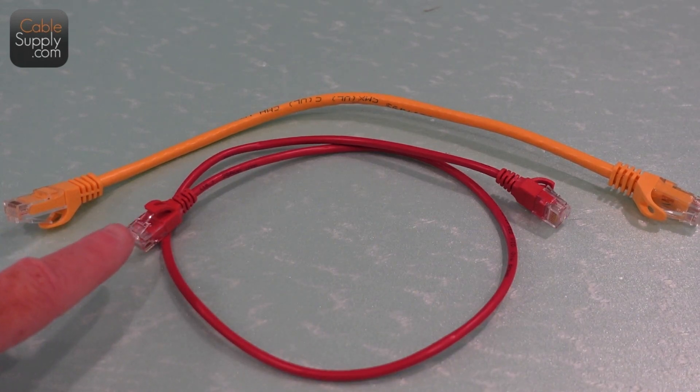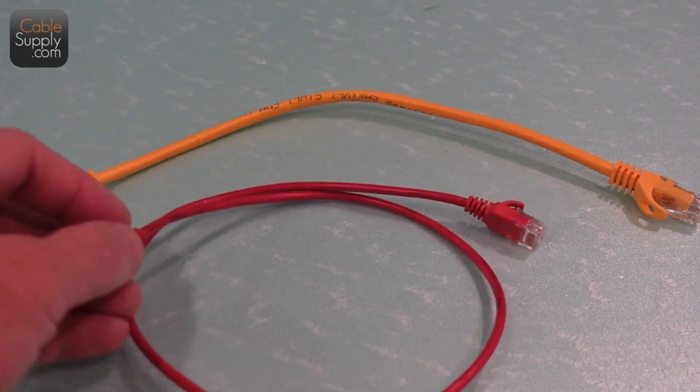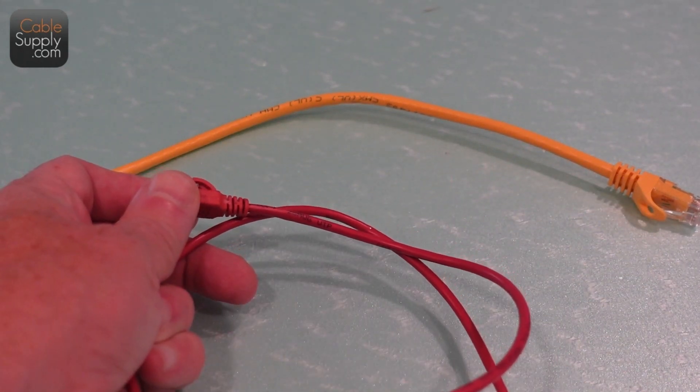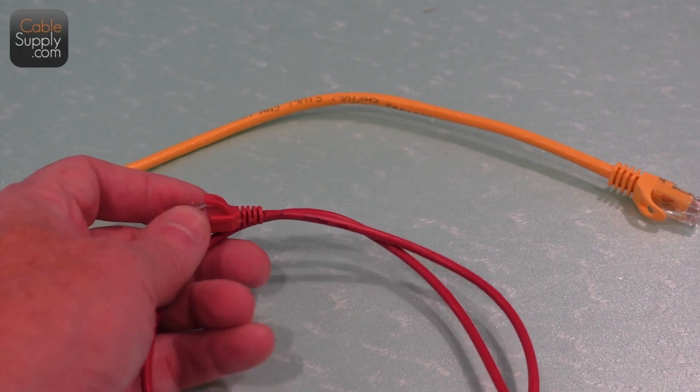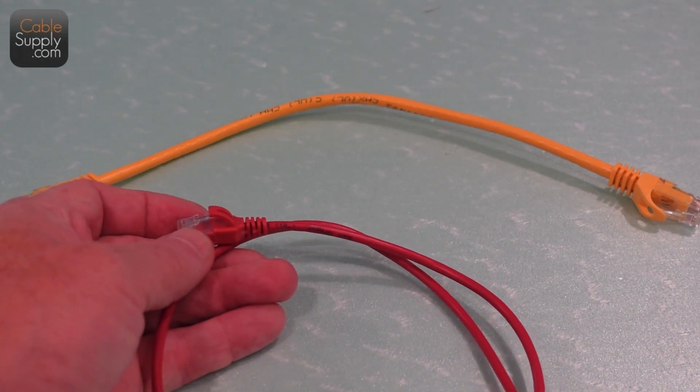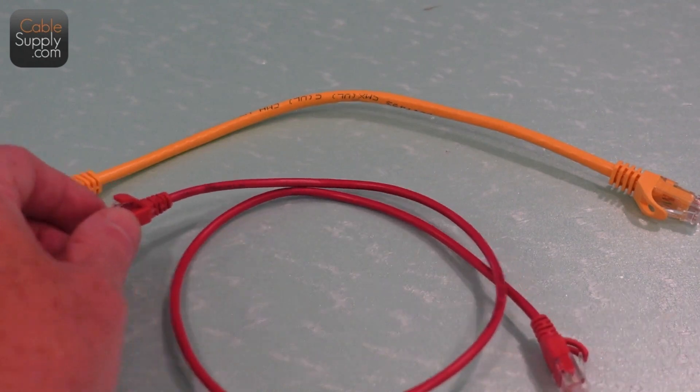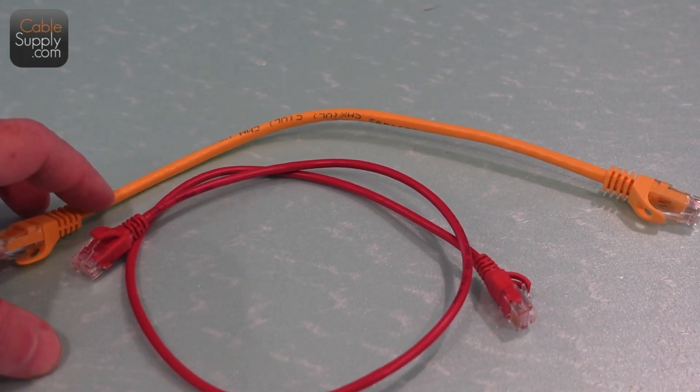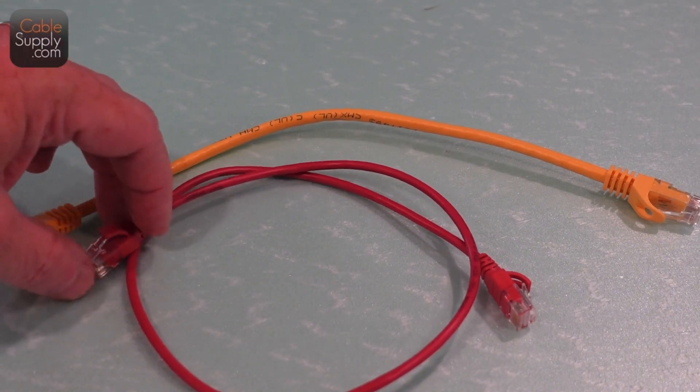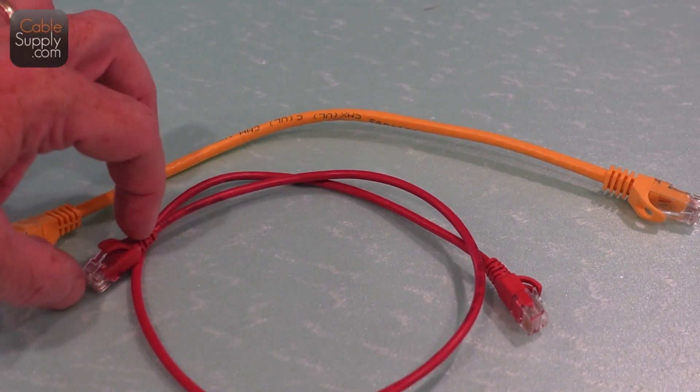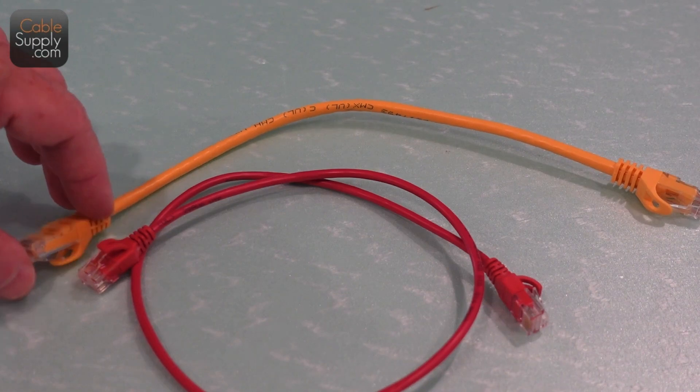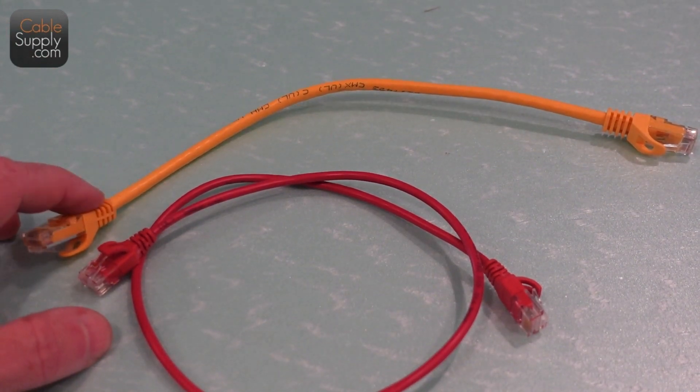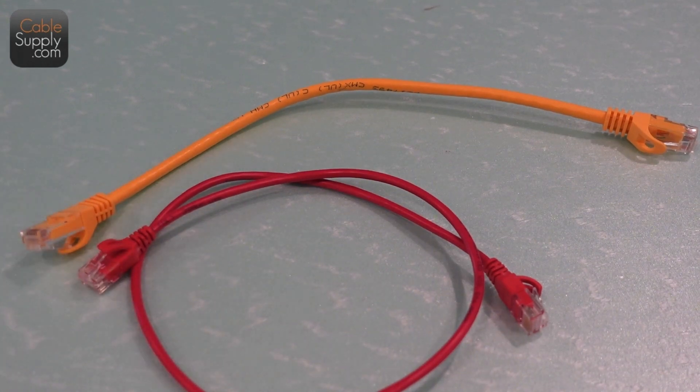They both have the same feature as far as a snagless boot, and I really like that. Plus they also have the boot that's been injection molded under pressure, so it's a solid patch cord. It's not going to fall apart. But some of the things you should notice: it's significantly thinner than the standard patch cord, and it's also shorter here between the front and the back. They've all been tested over and over again before you even get them.